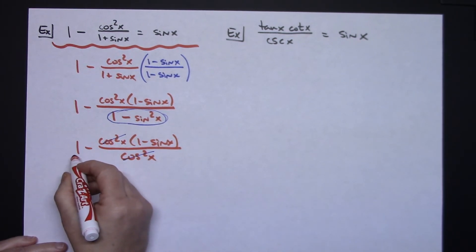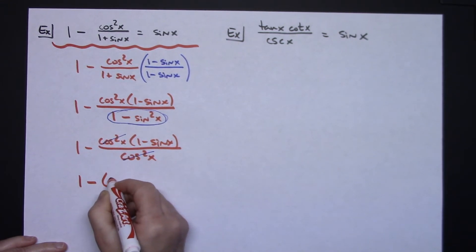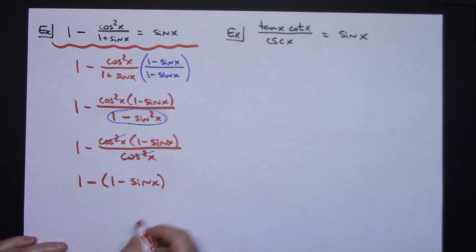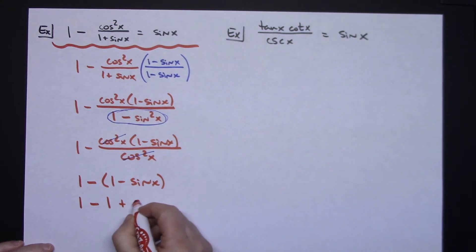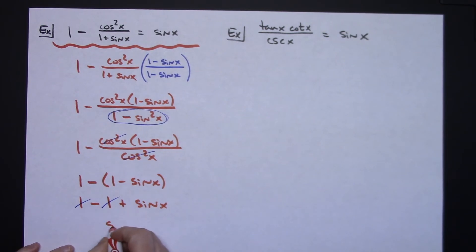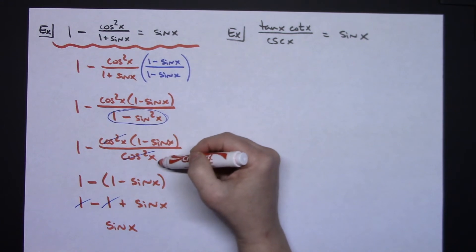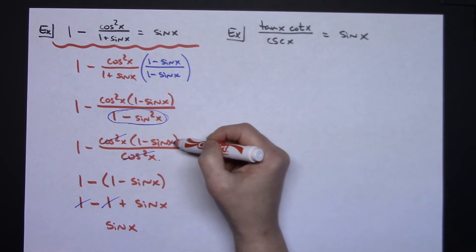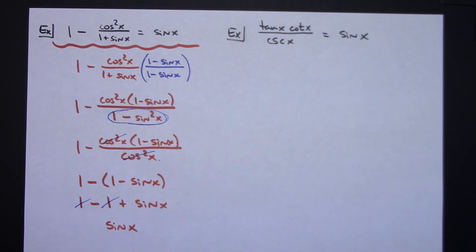The cosine squared x cancels top and bottom. Now I have 1 times (1 minus sine x), but I need to distribute that negative sign since it's a binomial. So: 1 minus 1 plus sine x. The ones cancel, leaving sine x — which is what I needed. The key tricks here were multiplying by the conjugate, using the Pythagorean identity substitution, and remembering to keep the parentheses around that binomial 1 minus sine x.